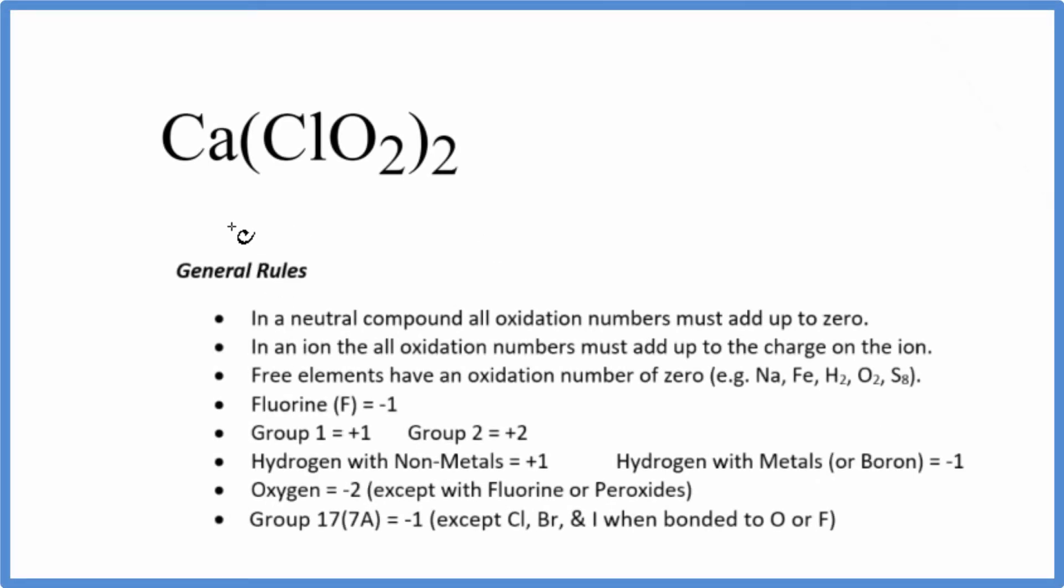In this video, we'll find the oxidation numbers for Ca(ClO2)2. The first thing we need to note is this is a neutral compound. There's no negative or positive after it, so it's neutral. All the oxidation numbers are going to add up to zero.